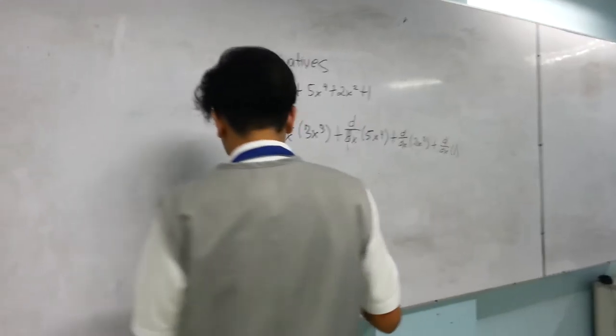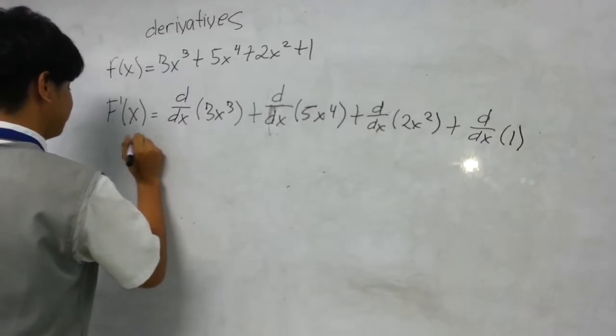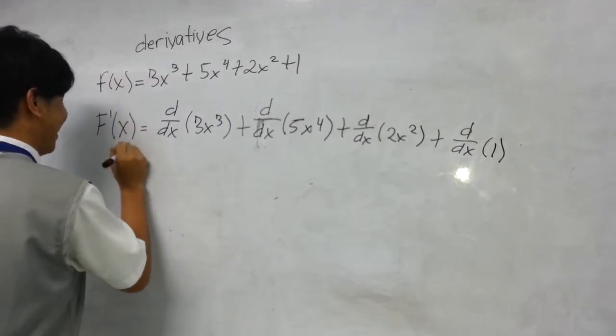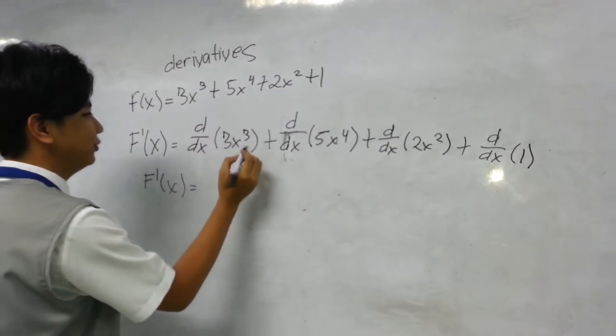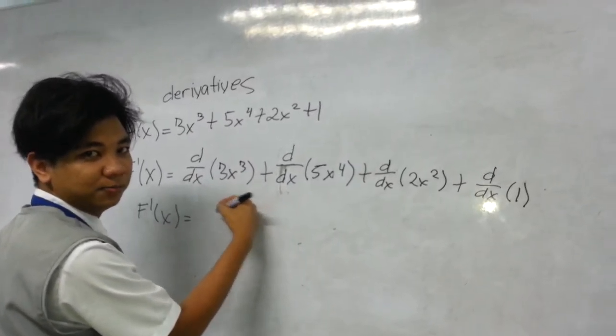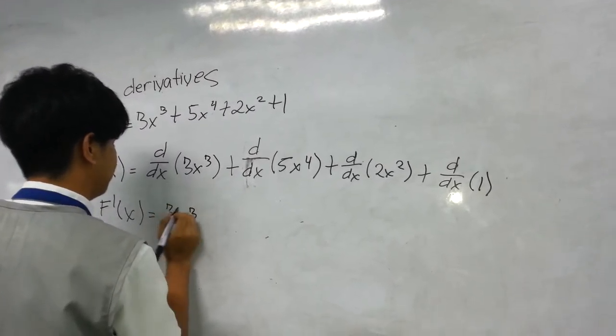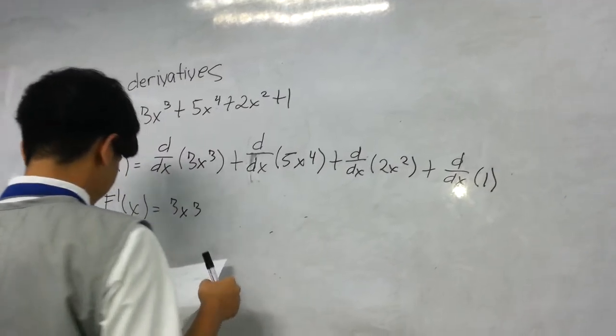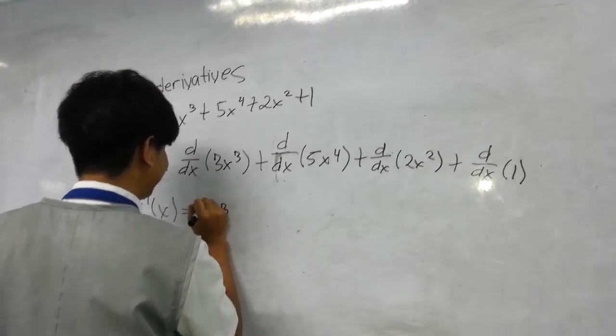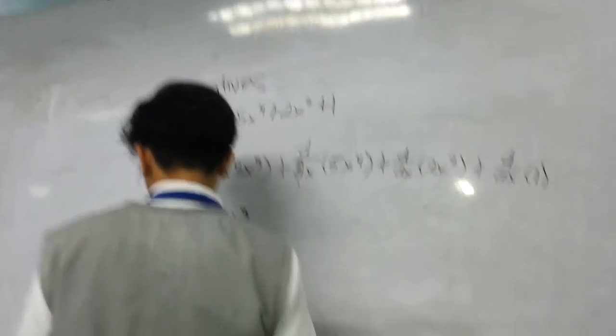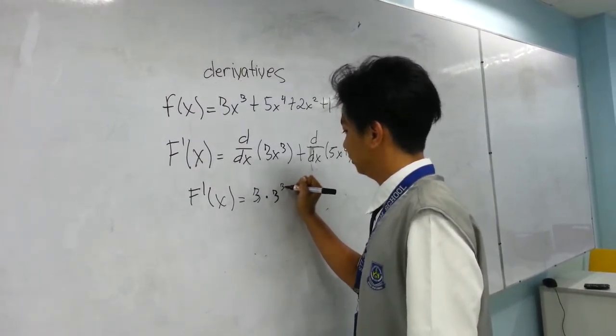The step is f prime of x equals—you're going to bring down the exponent and multiply it by the base. I'm sorry, I'm wrong. It's here. 3 times 3, and the exponent is always subtracted by 1.